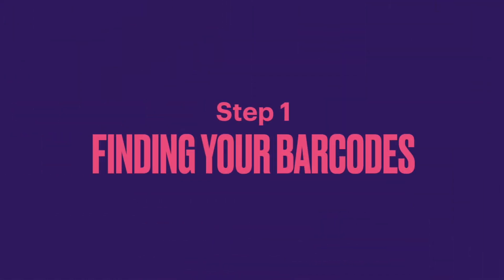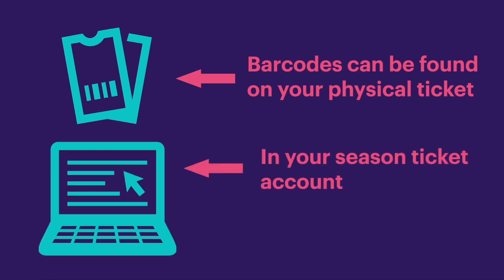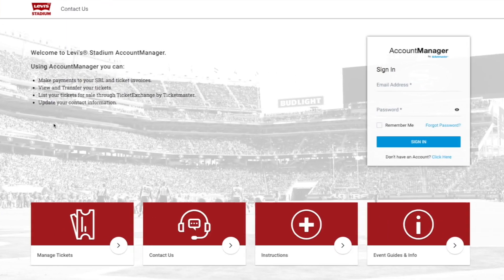In order to list your tickets on StubHub, first you'll need to find each ticket's barcode. Ticket barcodes can be found on the physical ticket, but most commonly will be found online within your season ticket holder account if you own season tickets, or your team account if you purchase single game tickets. Each team's account manager will look slightly different, but the general process for finding the barcodes will be the same.